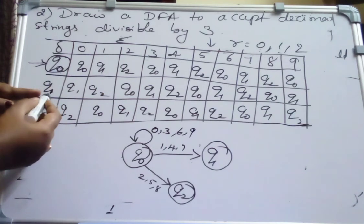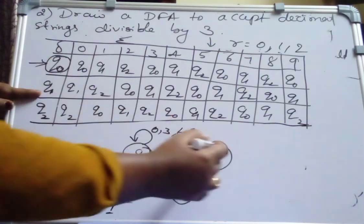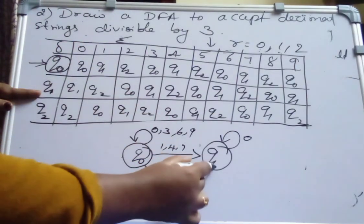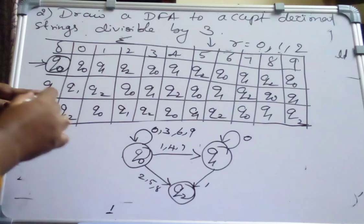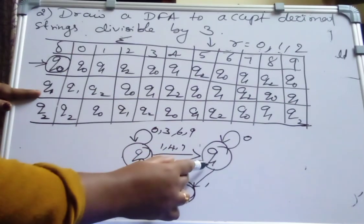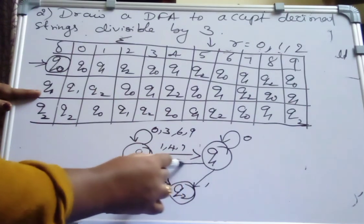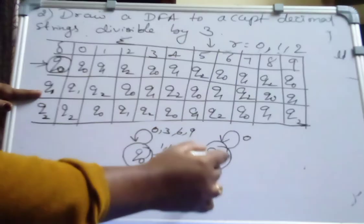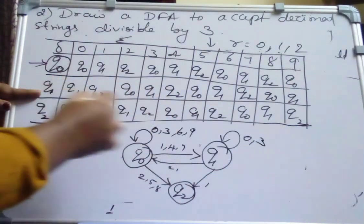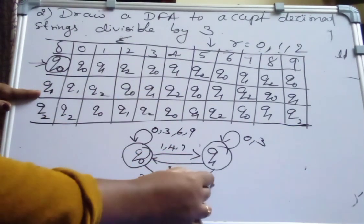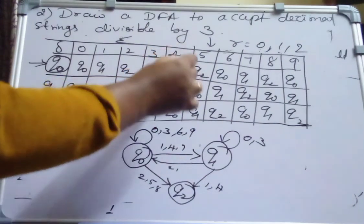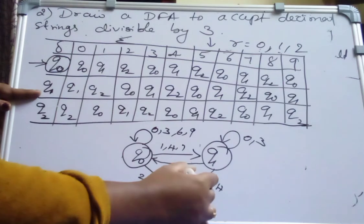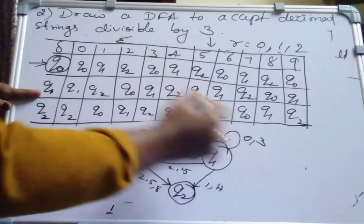Then similarly fill for Q1. Q1 on 0 to Q1. Q1 on 1 to Q2. Q1 on 2 to Q0. Q1 on 3 to Q1. Q1 on 4 to Q2. Q1 on 5 to Q0. Q1 on 6 to Q1.